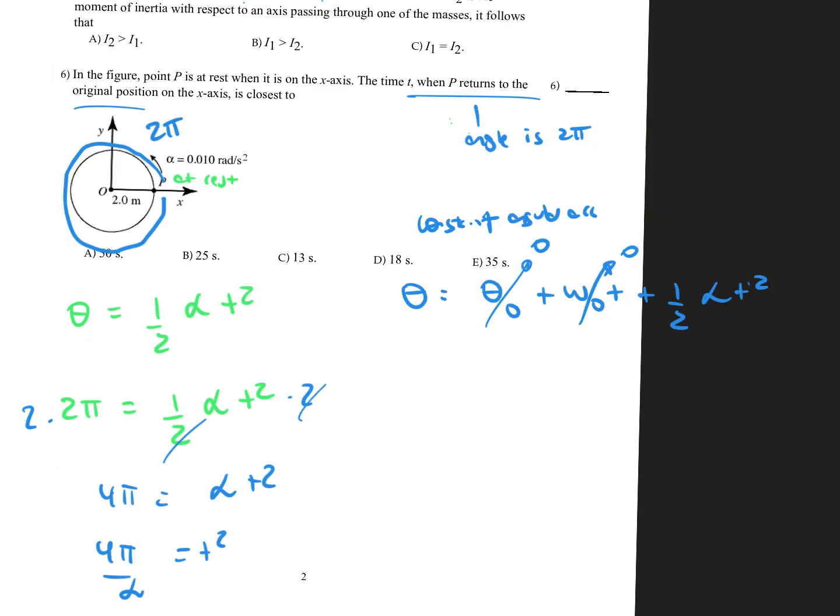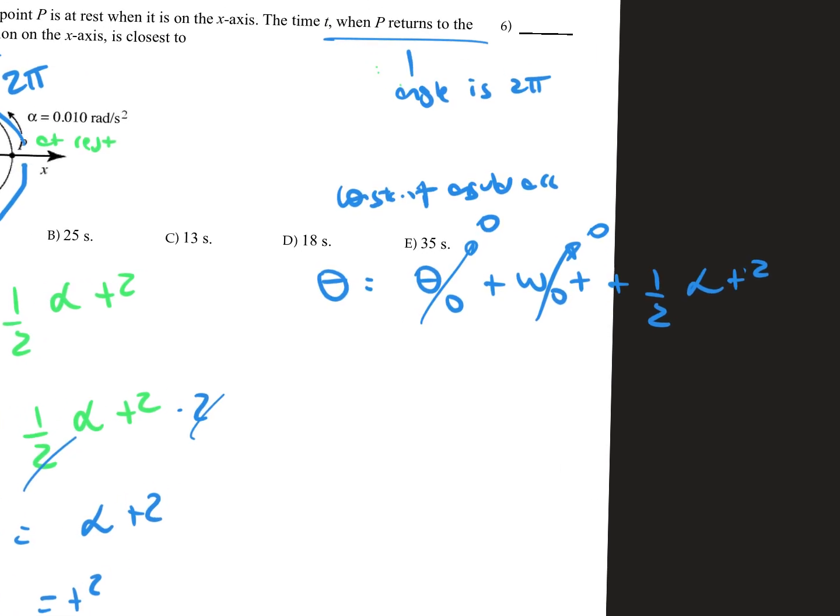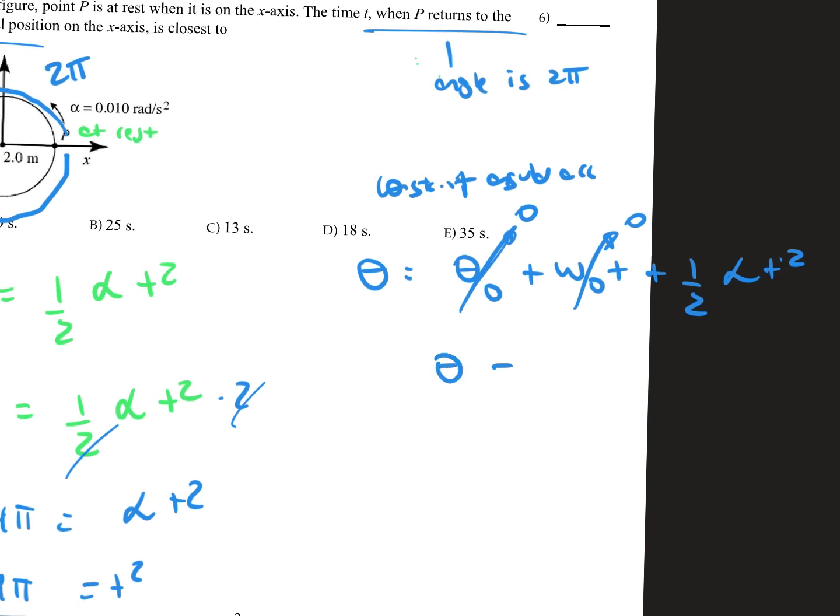Now the key thing is that point P is at rest, so that means that this is going to be 0. And the initial omega times the time is going to equal 0 as well. So we end up with theta being equal to one half alpha times t squared.